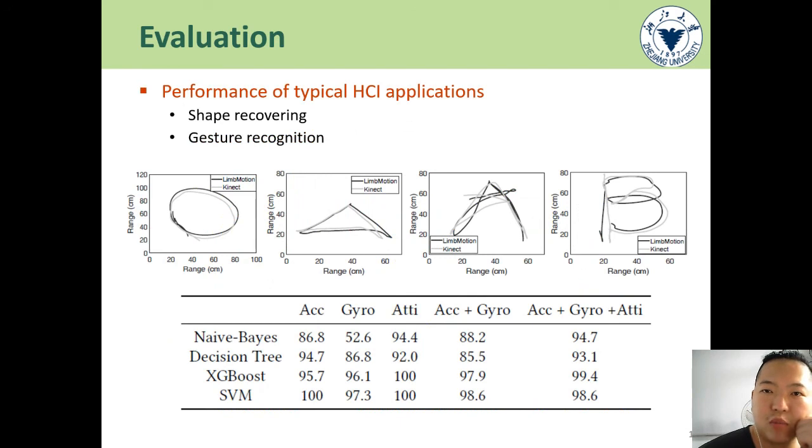We evaluate LimbMotion with two typical HCI applications. Experiment results show that LimbMotion recovers users' drawing shapes smoothly. Besides, using the wrist and elbow attitude as features, the gesture recognition accuracy is higher than just using IMU readings as features.